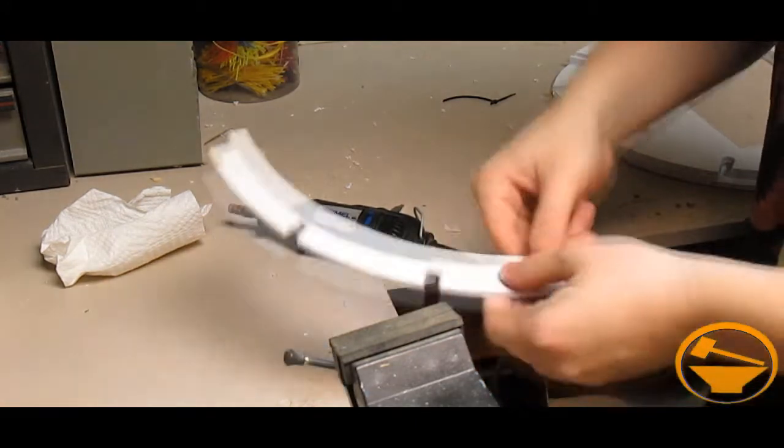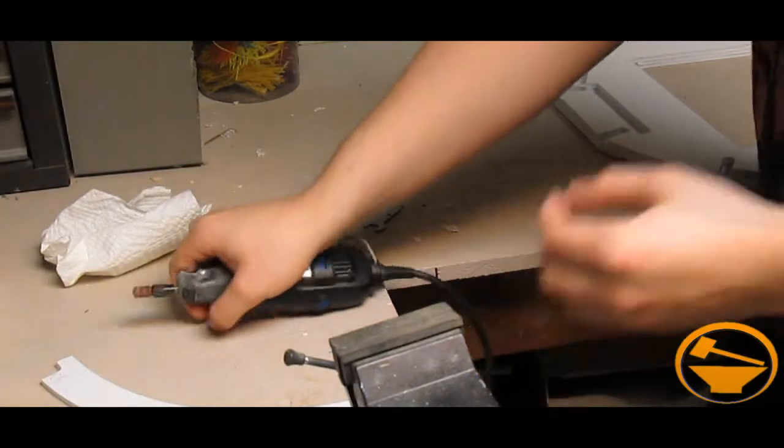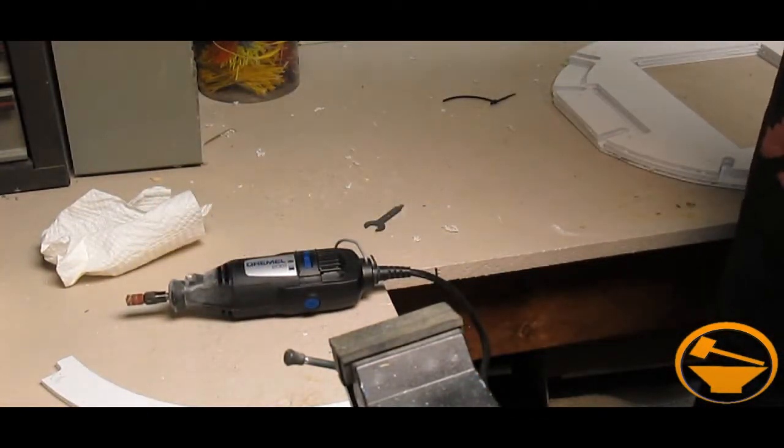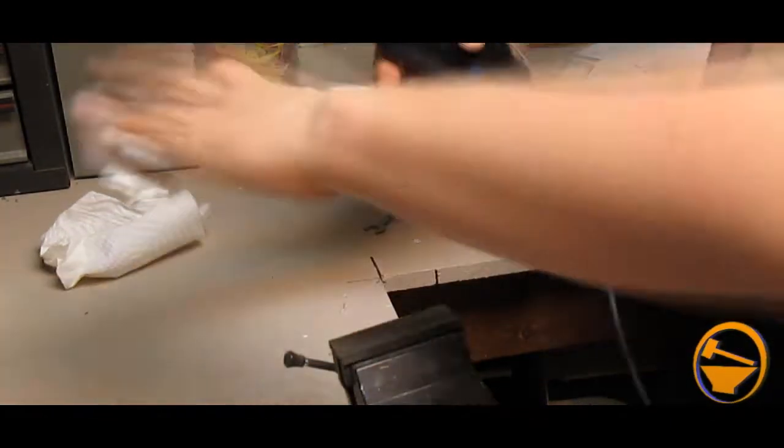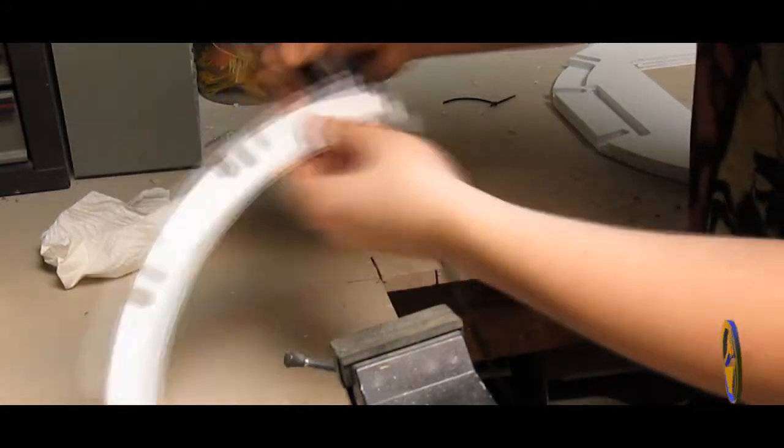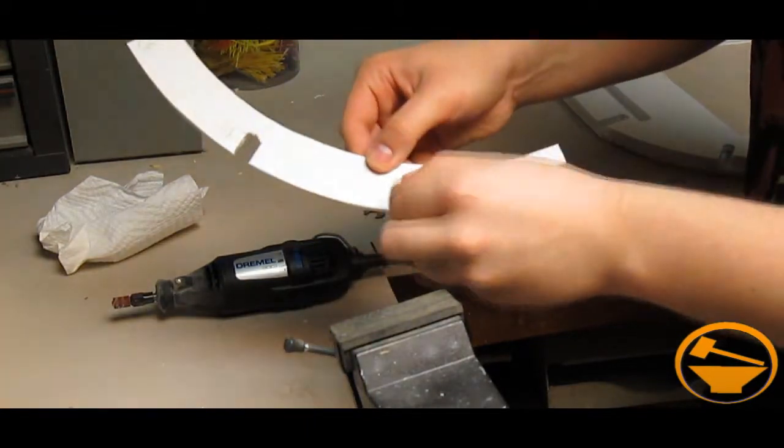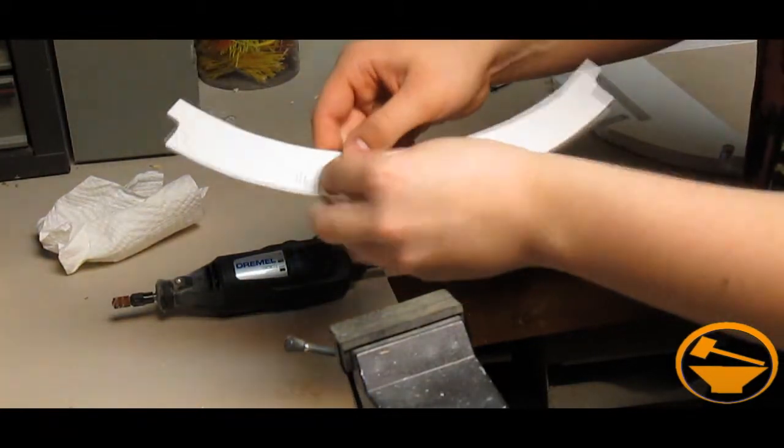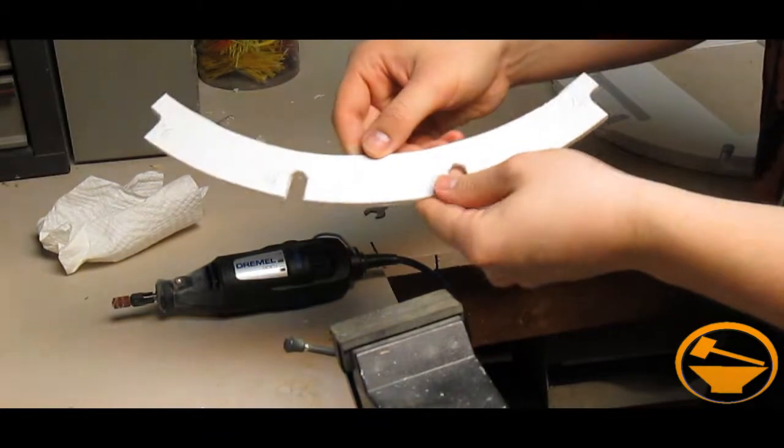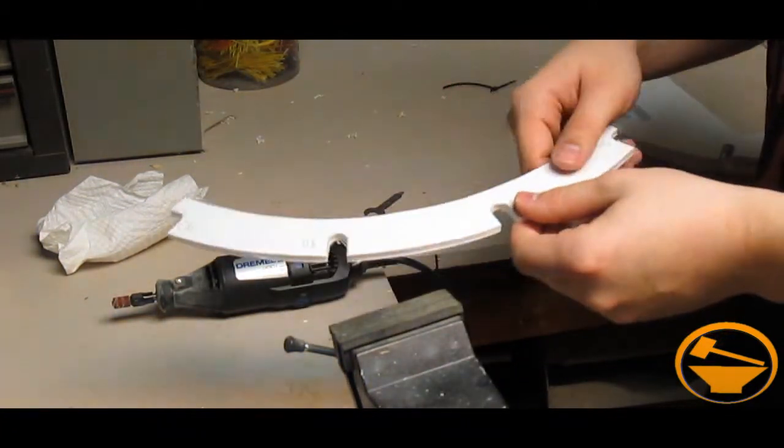What we're going to do is take the sanding bit and sand those little indents down. There you have it—we have our two little half-circle crests cut out. Just do that for all the rest of your pieces, and then we'll get these glued together.